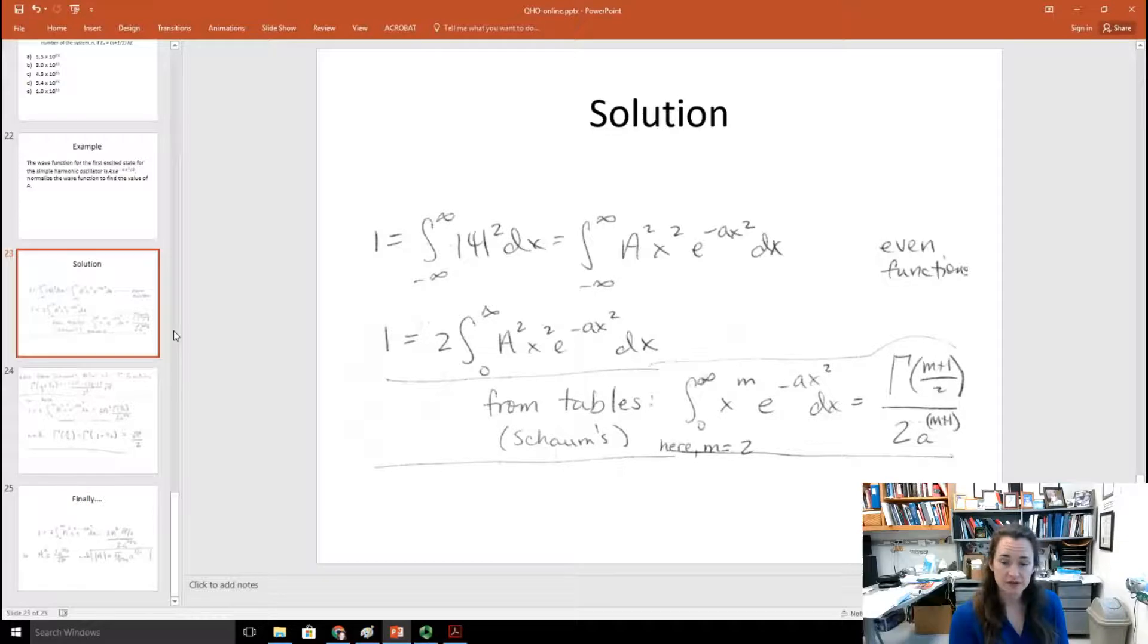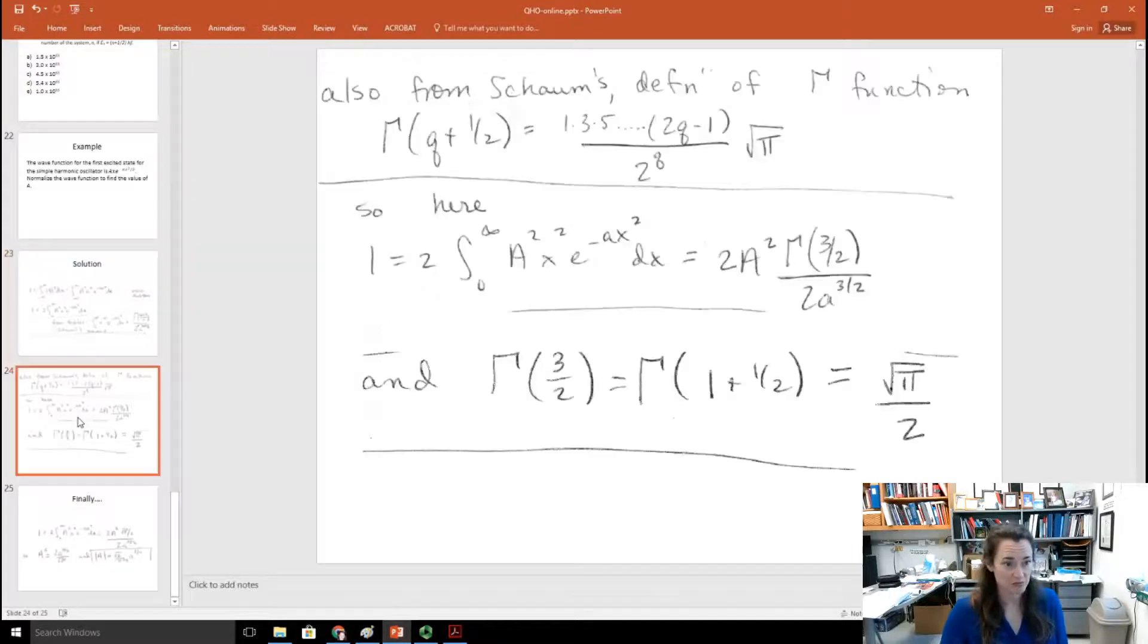Now, from reading the tables, the integral from 0 to infinity of x to the m power times e to the minus ax squared dx, well, the result of that is the gamma function of m plus 1 divided by 2 over 2a to the m plus 1 power. Now, if this is your first time integrating these things, you might be looking at that going, what the heck is a gamma function? Not to worry, that's also described in the Shams integral tables, or in the Shams mathematical handbook.